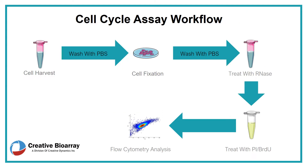The simple protocol for cellular analysis is outlined in the chart. Briefly, cells are fixed and permeabilized to allow the dyes to enter the cell and to prevent them from being exported out. Staining with the DNA binding dye then occurs, after cells have been treated with RNase to ensure only DNA is being measured. Several data sets are collected to ensure only single cells are measured.